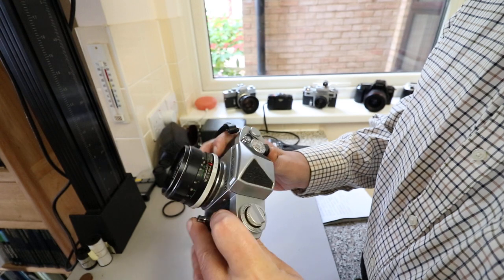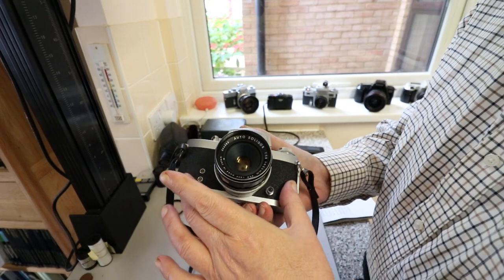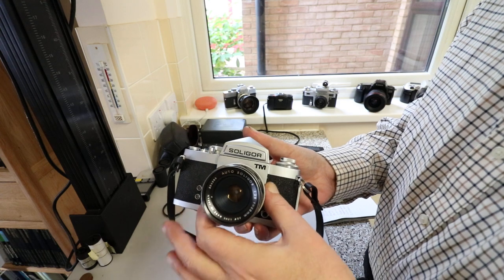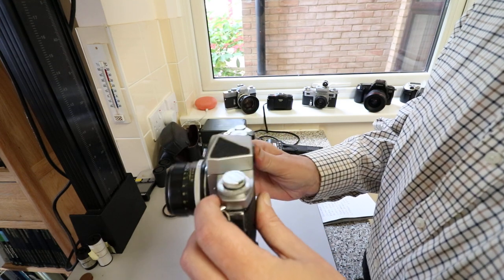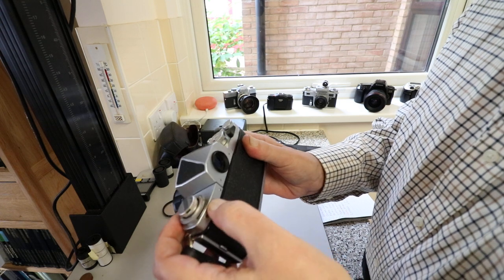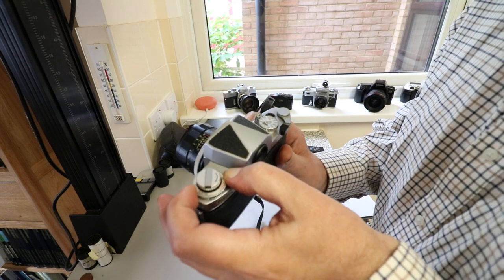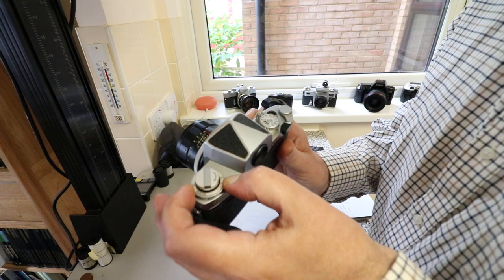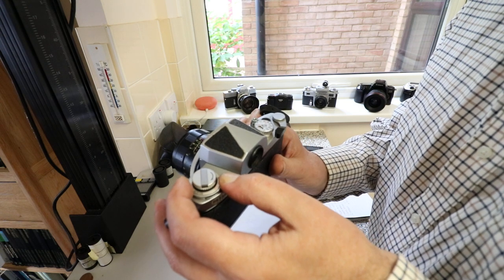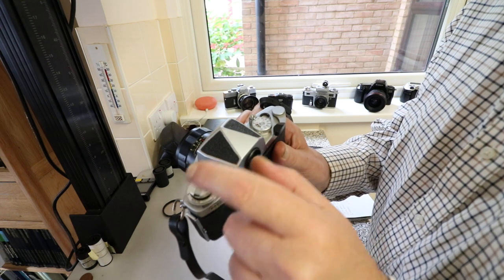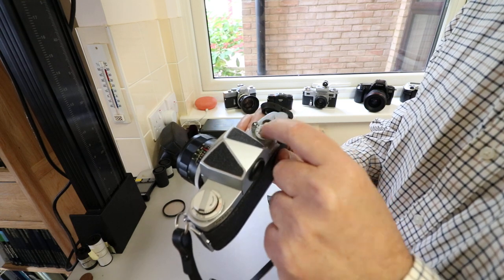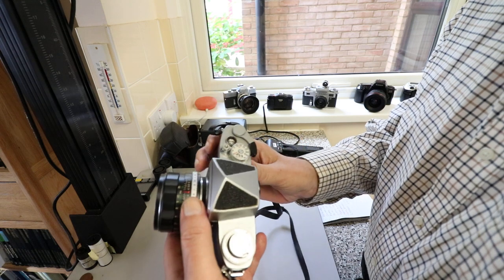This is the Mark 1 version from 1975, so it was only made for a year. They brought out a Mark 2 version. You'll notice there's no cold shoe or hot shoe. There was an accessory shoe that fitted over the rewind crank. The Mark 2 has a cold shoe on top of the pentaprism.